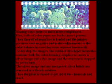Making color prints is much more complicated. Rolls of color paper are loaded into a printer, then the roll of negatives is loaded and the printer previews each negative and makes adjustments to the color balance in case they were exposed incorrectly. To develop the images, the oxidized developer molecules combine with the color-forming couplers to create a silver image and a dye image, and the reaction is stopped by a stop bath. The silver image and any unexposed silver halide are removed in a bleach solution. Then the print is rinsed to get rid of the chemicals and dried.